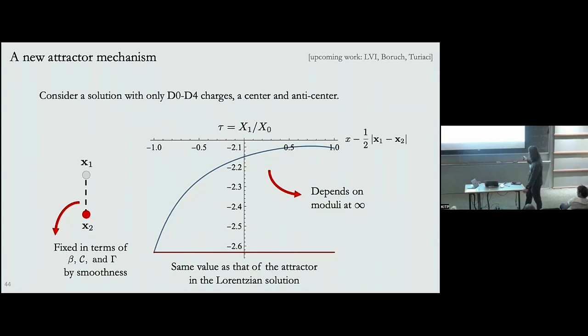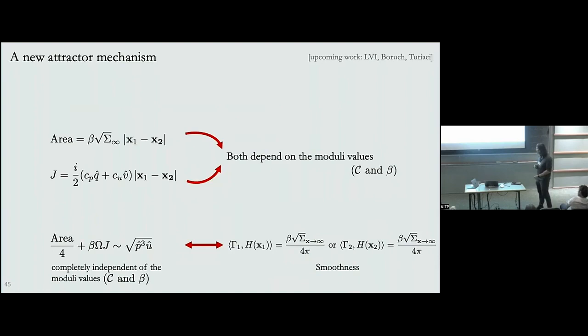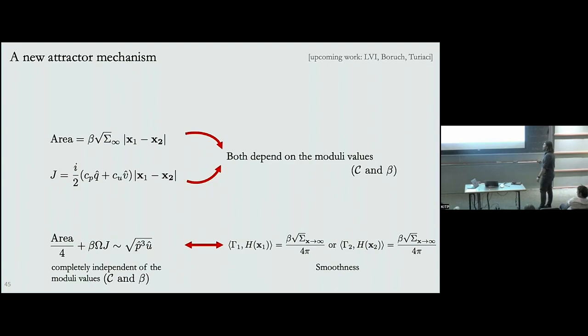You can solve for the scalar on the entire solution and plot what the scalar is on the horizon from the north pole to the south pole. You explicitly see that it depends on the moduli fixed at infinity — on the asymptotic values of the scalars — except at one point where it takes precisely the same value as that of the attractor solution in Lorentzian signature. From this you can compute the area and angular momentum, and find that both have a very complicated dependence on the inverse temperature and on the scalar moduli.